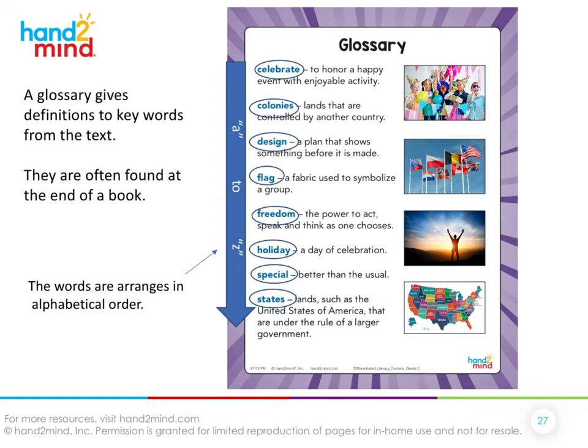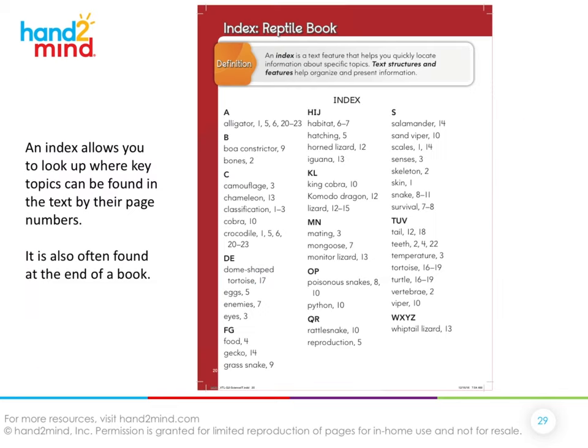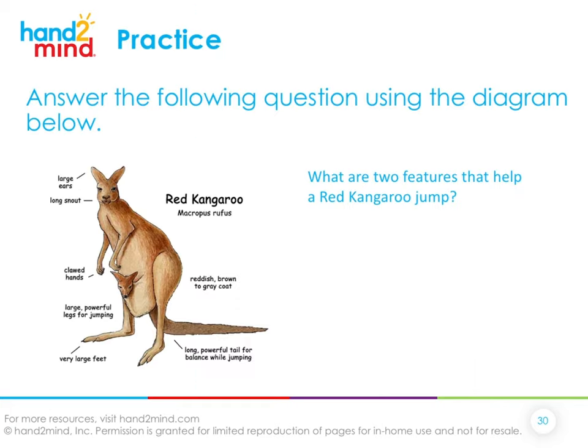Another very important text feature is the index. The index is also often found at the end of the book, and it allows you to look up where key topics can be found in the text and tells you their exact page number. It's a very important text feature to help you navigate your way through a text.